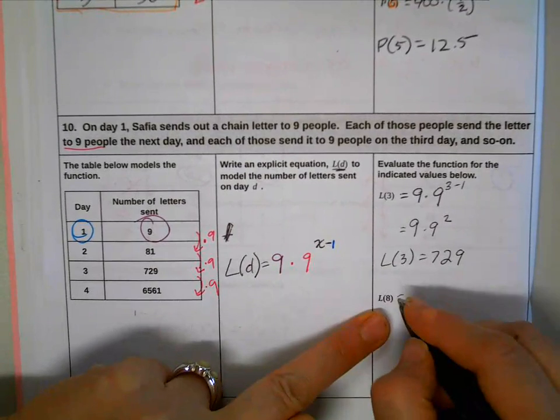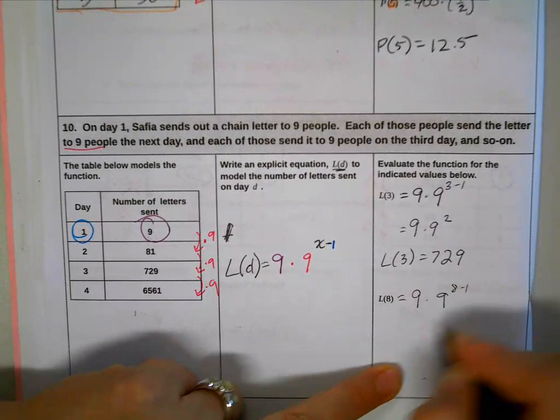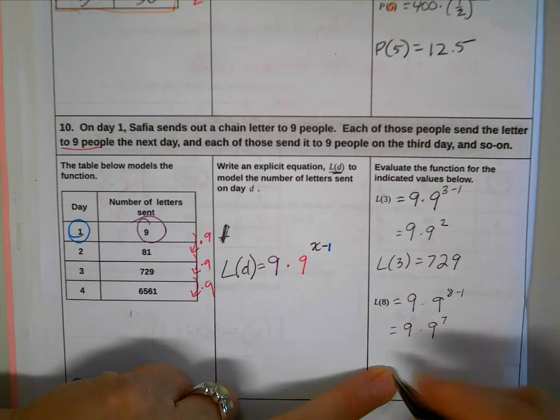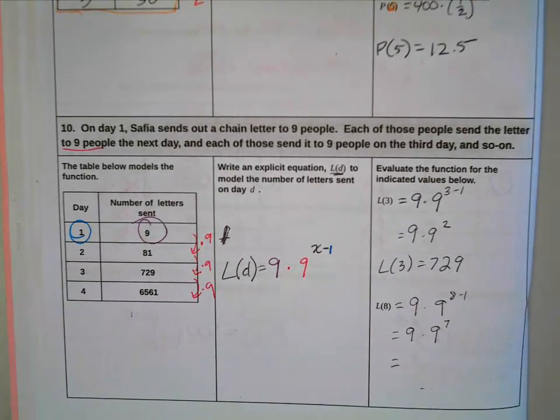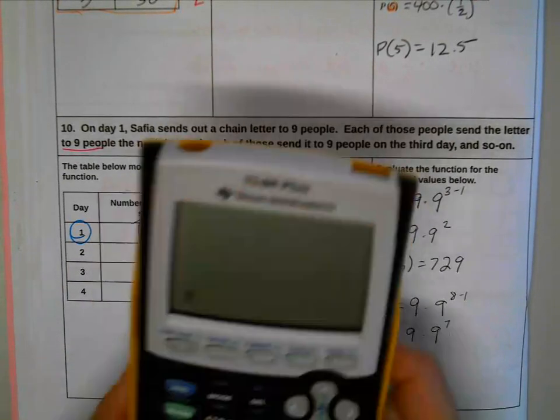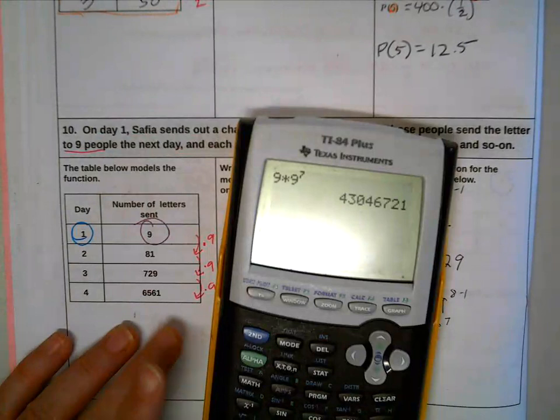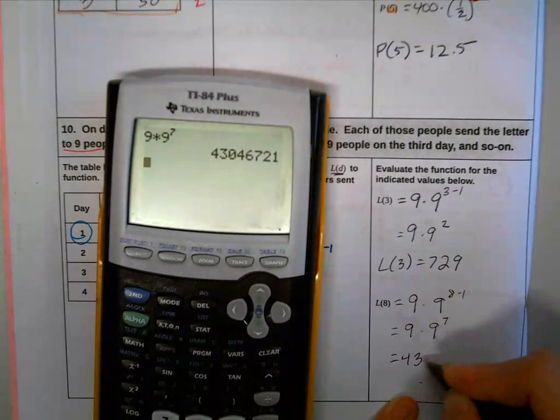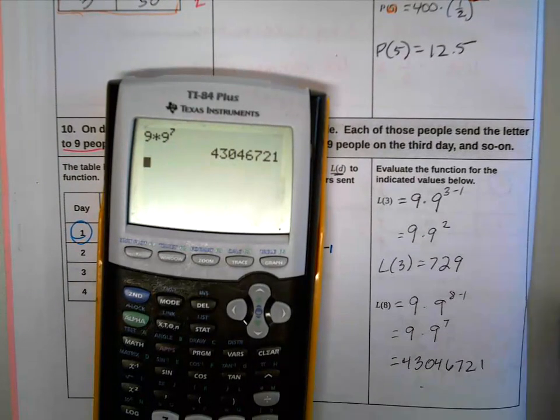All right, and then over here for L of eight, we do the same thing. Nine times nine to the eight minus one, which is equal to nine times nine to the seventh power. And then you would have to find that answer, which I think I have a calculator here. Nine times nine to the seventh power equals, whoa, that's a lot of letters, 43046721. There you go, pretty good.